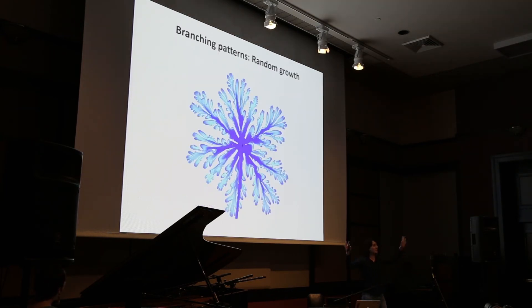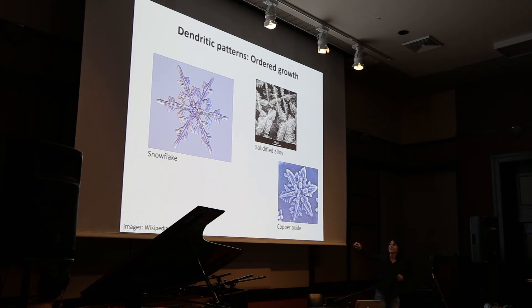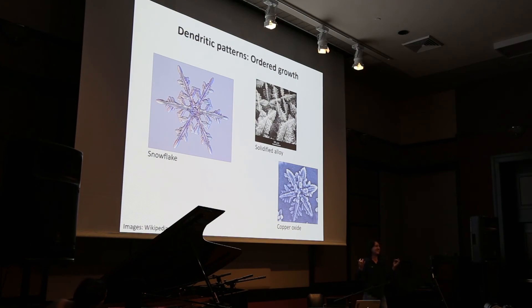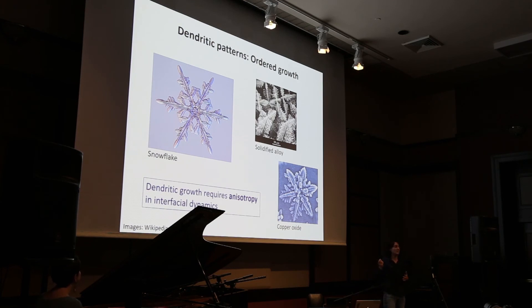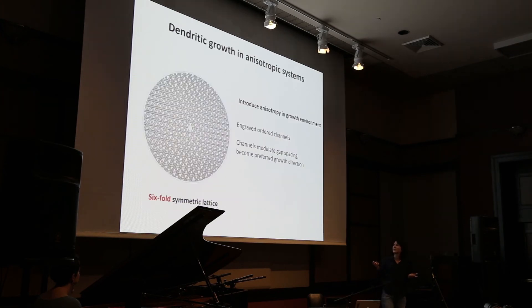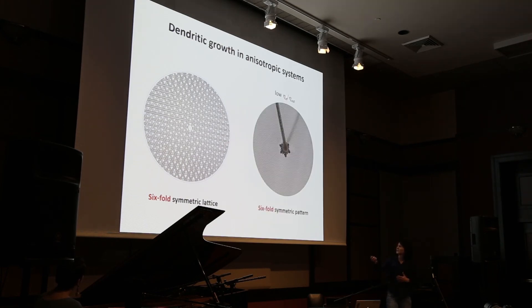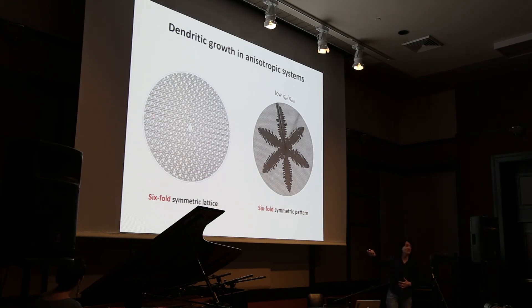We learned something about branching patterns, but nature has many more tricks. In particular, nature can create systems that are very ordered — what we call dendritic patterns — like a snowflake with very specific six-fold symmetry, or solidified alloys or copper oxide that spontaneously take on extremely intricate shapes. In our simple fluid experiments, we can get insight into these ordered dendritic patterns because we realize that to get dendritic growth, we just need some anisotropy or order in the system. We can engrave ordered lattices on one of our plates, and then we switch from a random pattern to one with the same six-fold symmetry as the lattice in which it is growing.